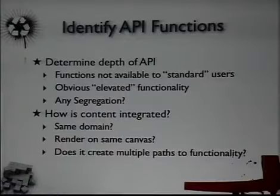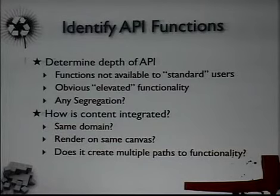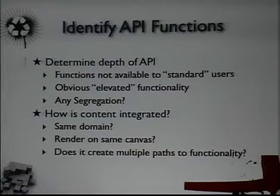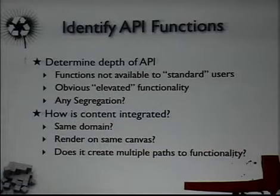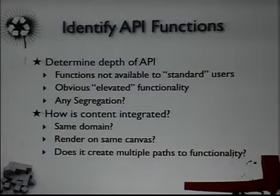How is your content integrated? Is it integrated into the same domain? Is it rendered on the same canvas? Are you creating multiple pathways to similar functionality? Where that becomes a problem is fix time — if you find a bug and fix it in one spot, you need to fix it in multiple spots, which often gets forgotten about. So you may have a bug identified a year ago that's still available through your API. And bugs not only from a coding perspective, but from a session management and authorization perspective — you may be providing standard users with elevated functionality through the API that they don't have through the standard interface.